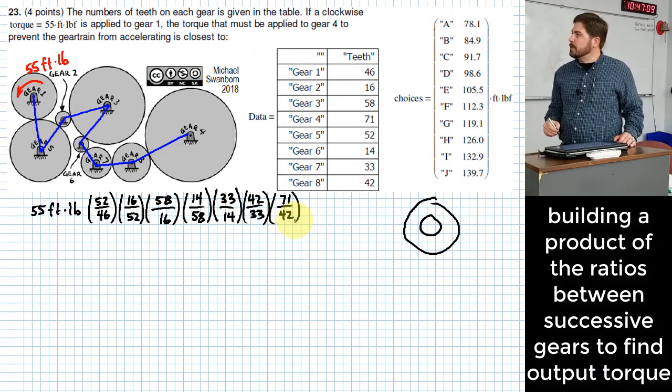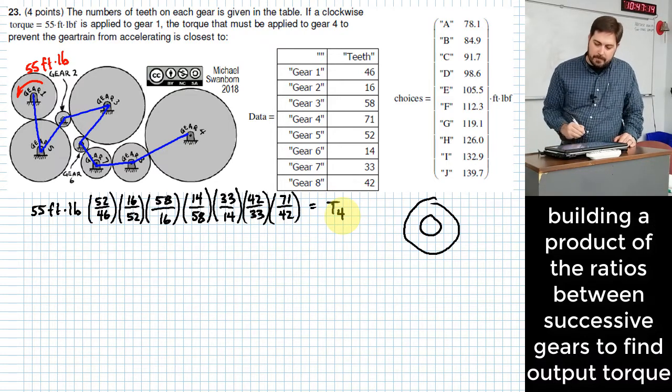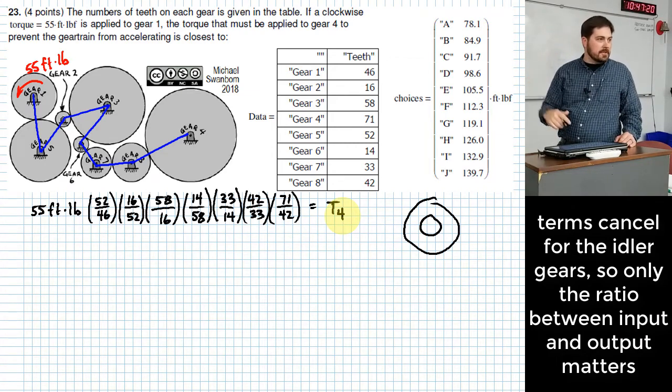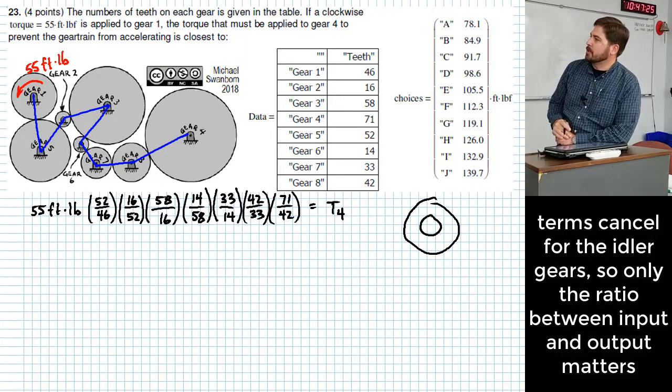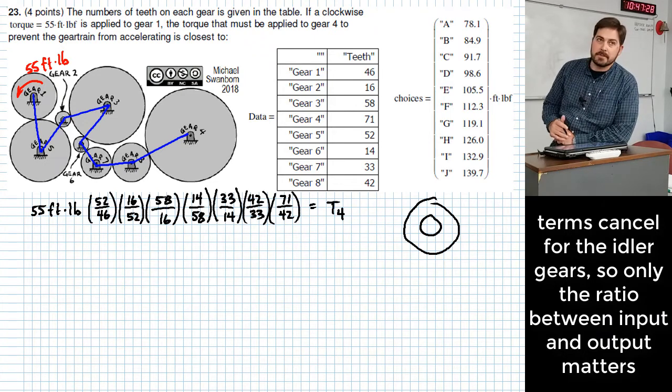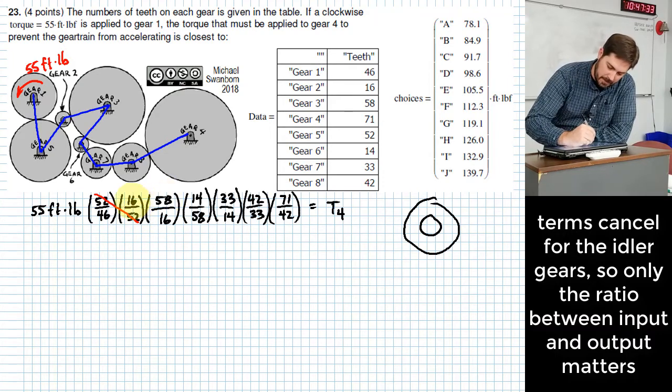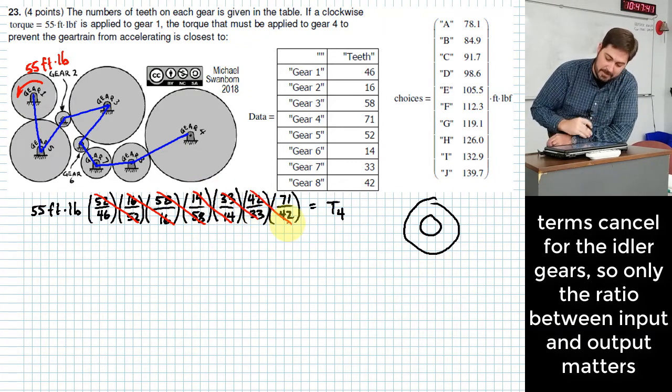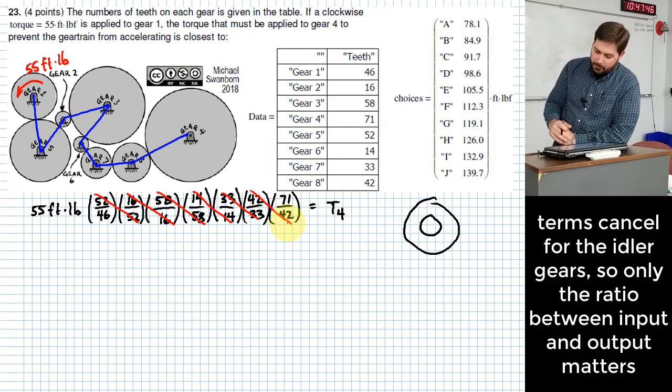And this would be the torque at gear four, we'll call it T4. So we did that one the hard way. We went all the way through it and did each of the ratios. But let's think about it mathematically for just a second. What can you do with a lot of these multiplications? Cancels out. 52 cancels out, 16 cancels out, 58 cancels out, 14 cancels out, 33 cancels out, 42 cancels out. And what are you left with? 71 over 46.